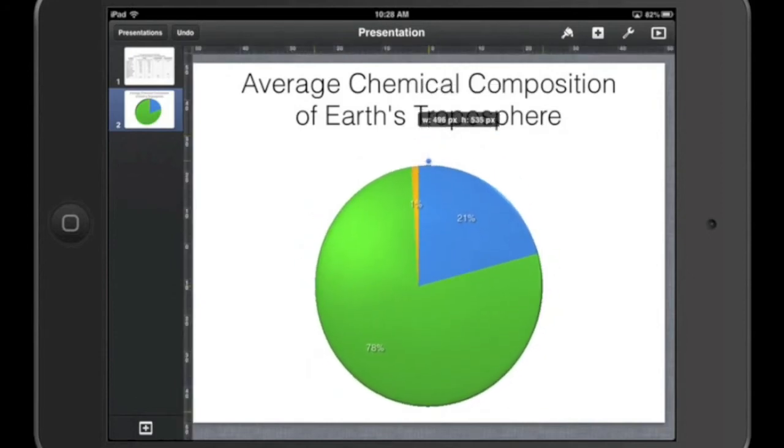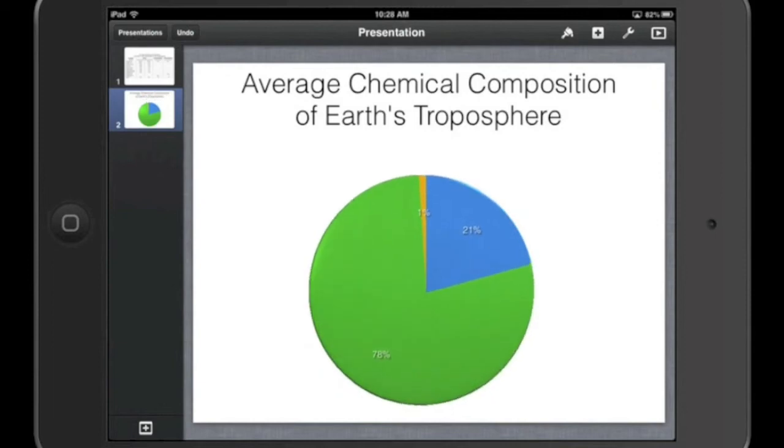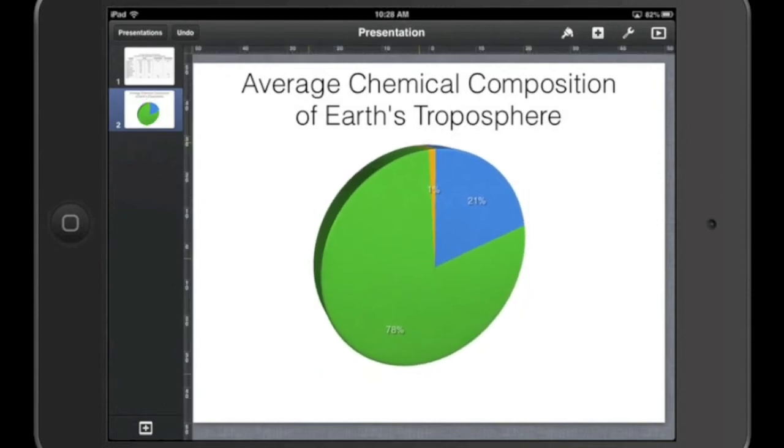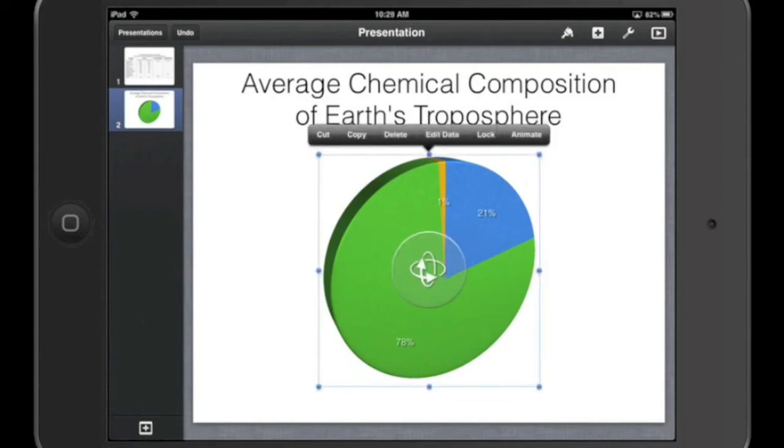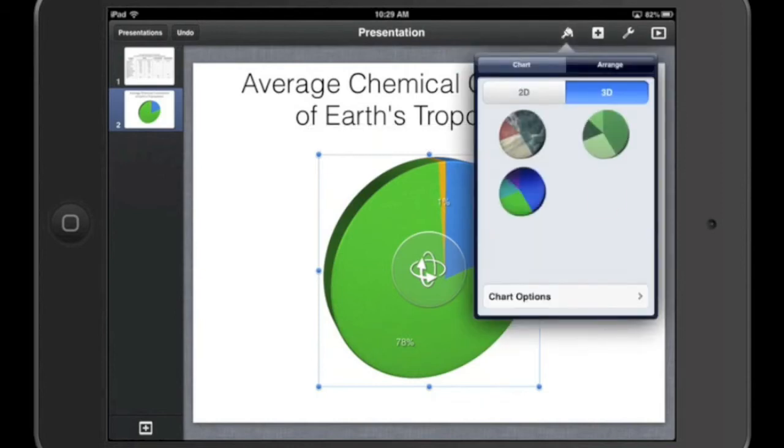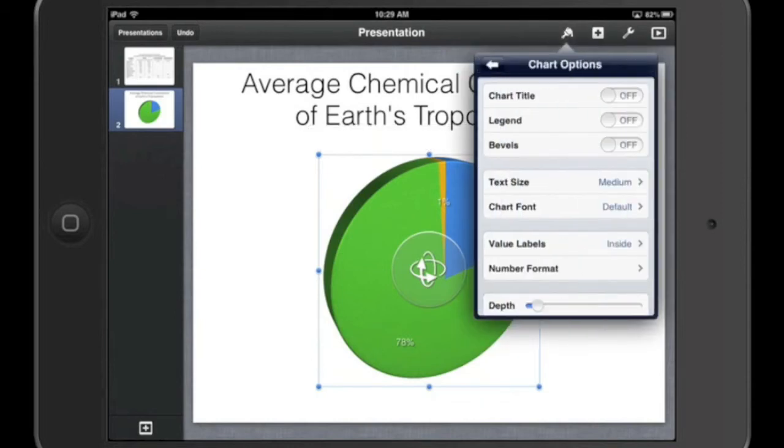I'm actually going to make it a little bit smaller before we start formatting it and orient it in a nice way. Perfect. Excellent. Now, one of the things the students need to realize is that with a pie chart, it's pretty useless unless I know what the yellow and the green and the blue actually mean. So Keynote has some built-in chart options, which are very helpful. What I can do is I can select the chart and go up here to the paintbrush icon, and you'll see Chart Options. I'm going to select that.